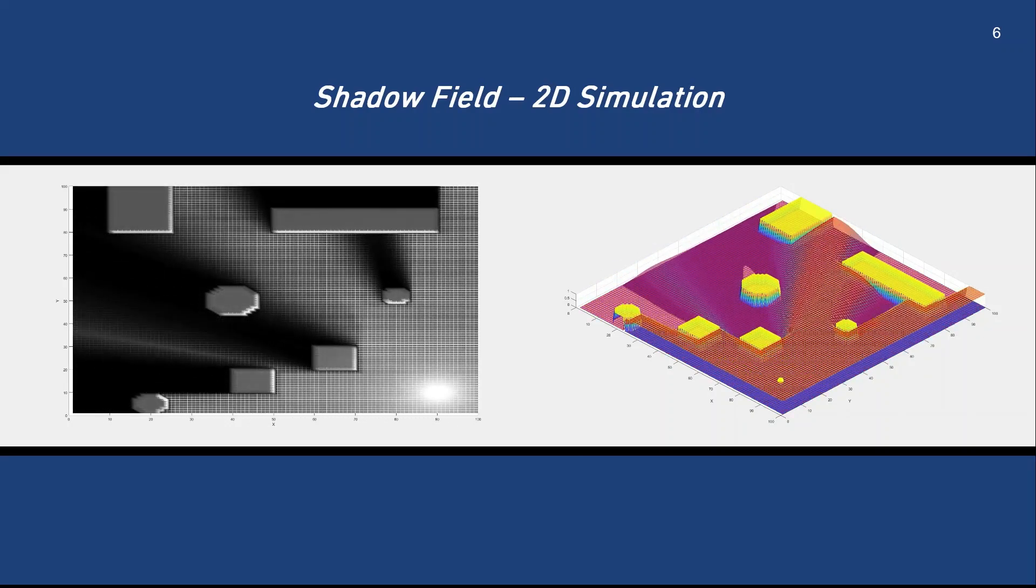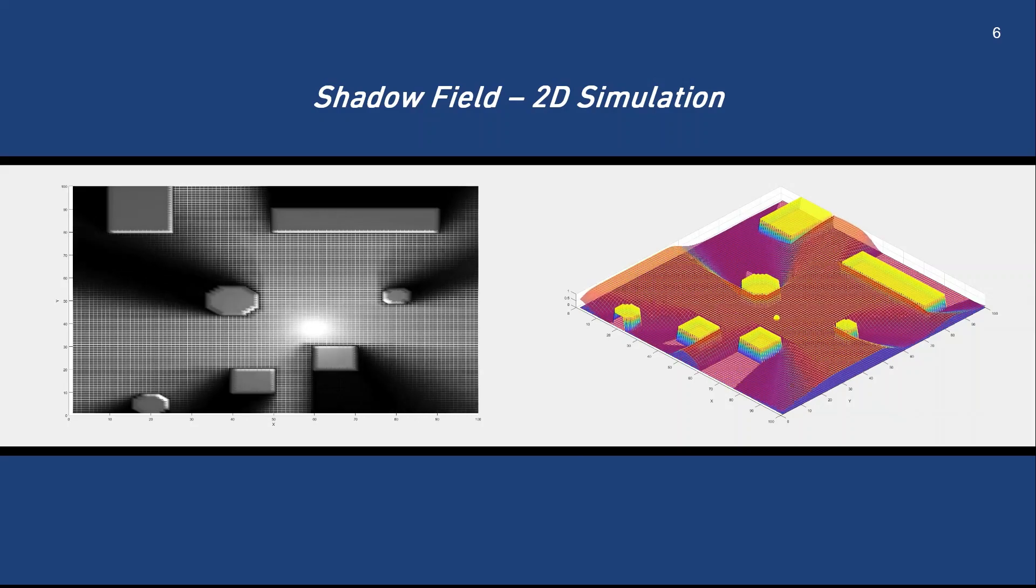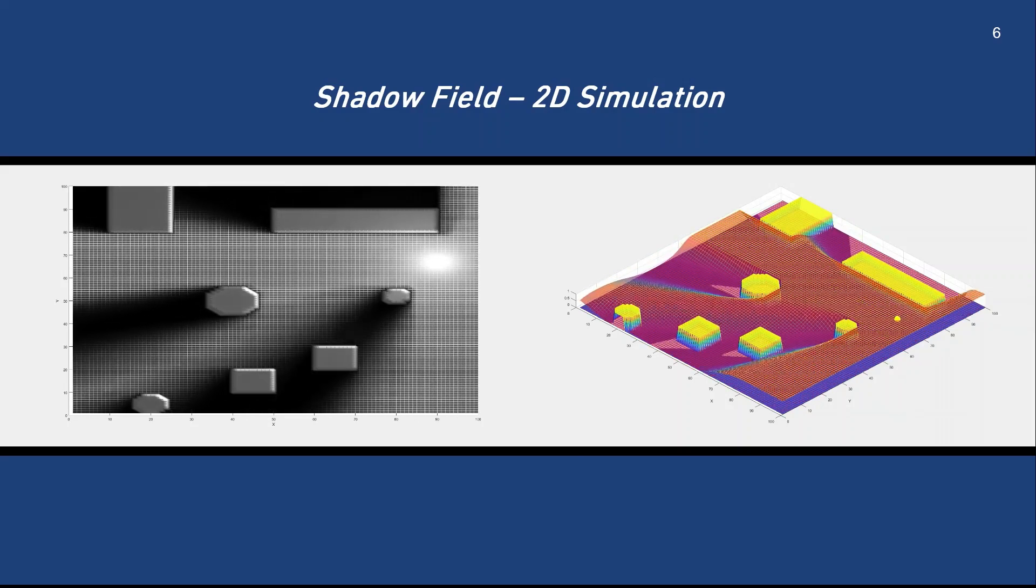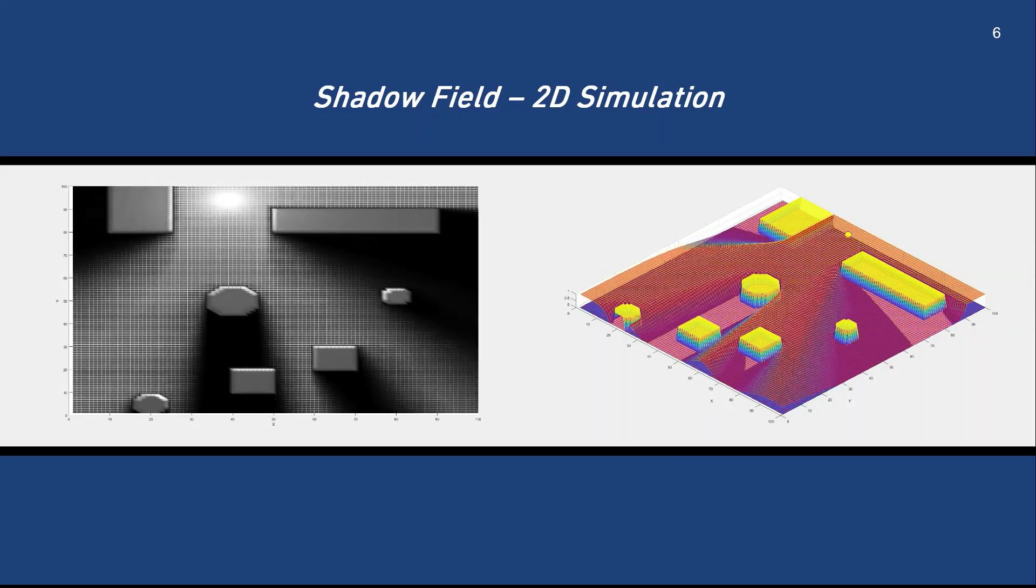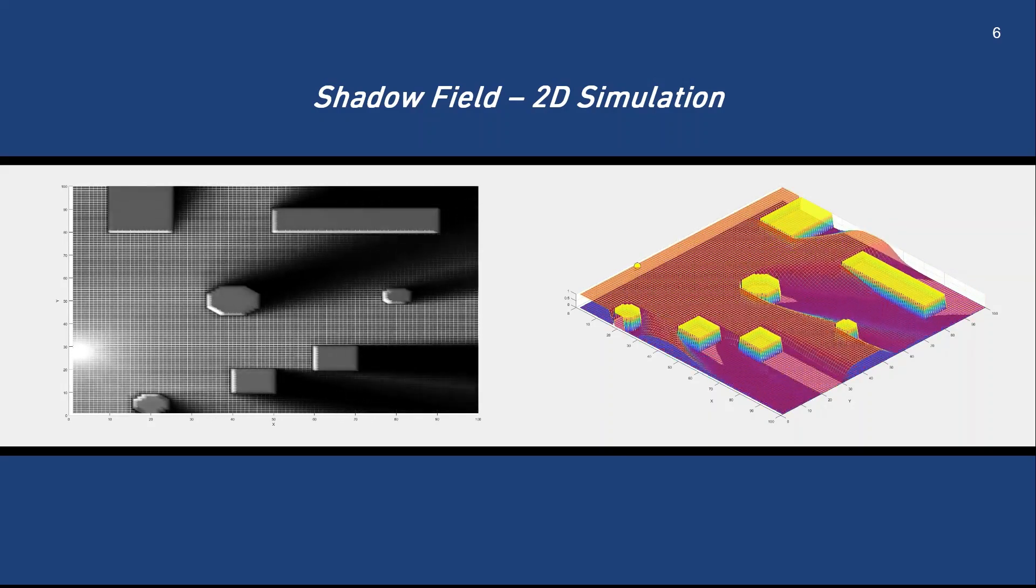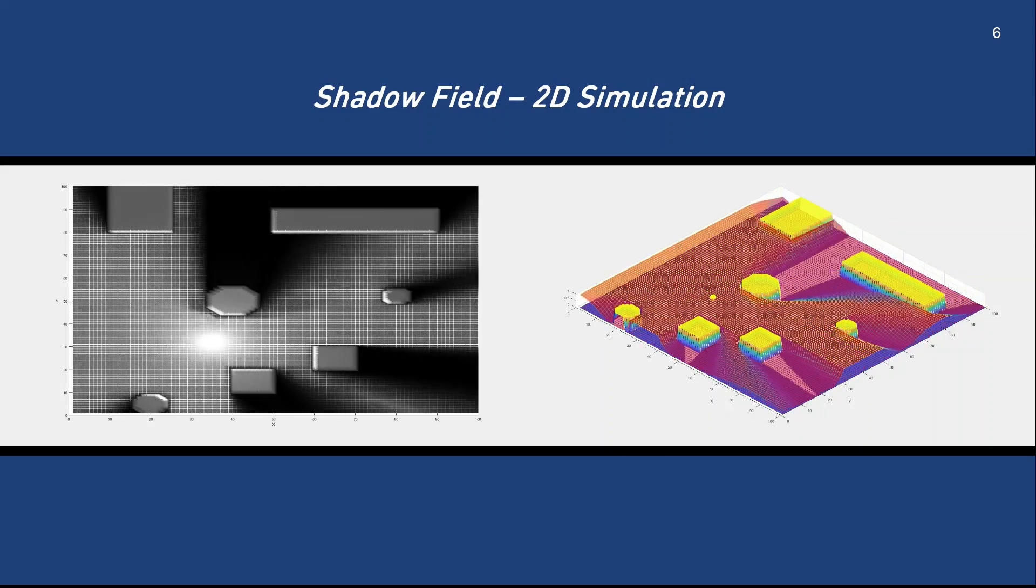With a light source dynamically moving between occluding obstacles, the resulting shadow field mesh exhibits the same characteristics of smoothness and continuity as in the 1D case. In the top view, the shadows of the occluding obstacles exhibit both umbras as the dark regions and penumbras as the outer shades of gray.